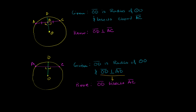Just like in that previous proof, we'll set up some triangles since we know a lot about triangles. We'll set up the triangles by drawing two more radii: radius OC and radius OA. That's useful because we know they're both radii of the same circle, so they have to be the same length.